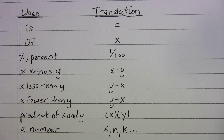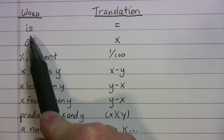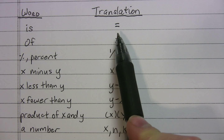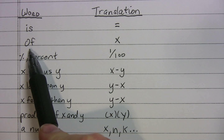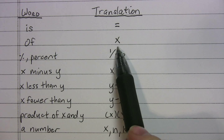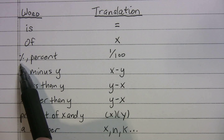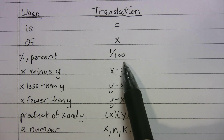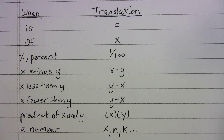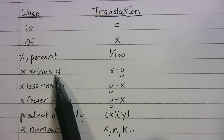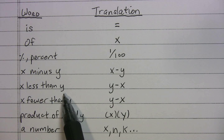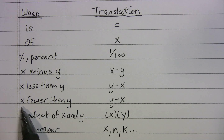The first one is 'is' — anytime you see 'is,' you're gonna think equals. Anytime you see 'of,' you're gonna multiply. When you see the percent symbol, or it's written out as 'percent,' you're gonna divide by 100 or multiply by 1 over 100 — same thing.